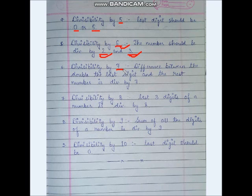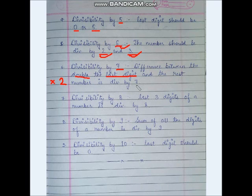Divisibility by 7: to check divisibility by 7, take the last digit of the number and double it. Then subtract that doubled value from the rest of the number. Check whether the result is a number from the 7 times table. If it is, then the original number is divisible by 7.